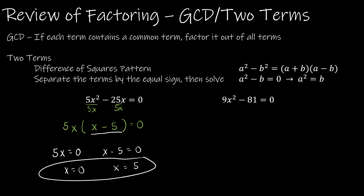For my second example it's not quite as easy. I can take out a 9, which leaves me with x squared minus 9 equals 0, but this doesn't work the same way because I still have x squared — two x's together — which means I'm not done factoring. So we have two ways to solve from this point, and they're both going to result in the same solution. Let's start with the difference of squares pattern.